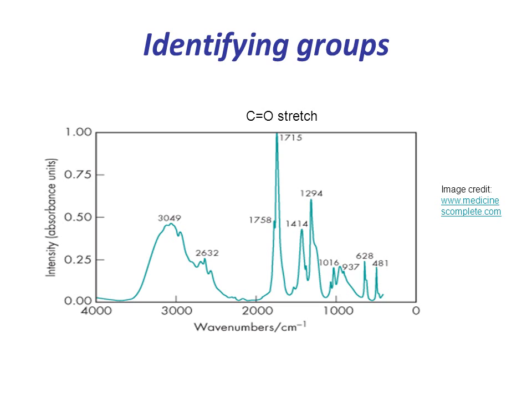The broad peak around 3,000 wave numbers indicates the presence of a single bond to hydrogen, and given the width, it is most likely due to the presence of a hydrogen bonding OH group. The fine structure in the peak may also indicate the presence of some CH groups.